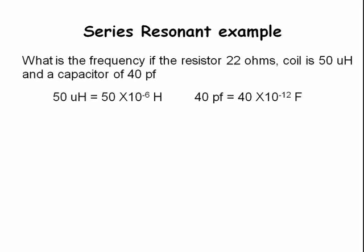50 microhenries equals 50 times 10 to the minus 6 henries. 40 picofarads equals 40 times 10 to the minus 12 farads.